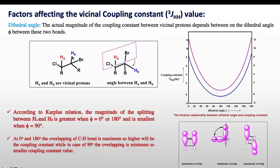In one configuration these two C-H bonds have a 0 degree dihedral angle, while in another the two protons are approximately at 90 degrees. According to the Karplus relation, the magnitude of splitting between protons HA and HB is greatest when the dihedral angle is either 0 or 180 degrees, and is smallest when the dihedral angle is 90 degrees. In the graph, when the bond angle is 0 or 180 degrees the coupling constant is higher, and as the angle approaches 90 degrees the coupling constant approaches 0.